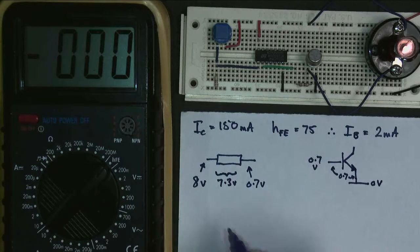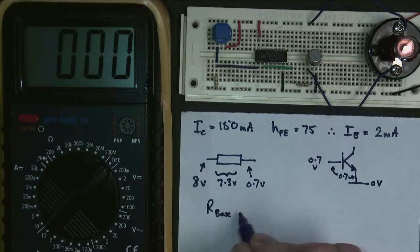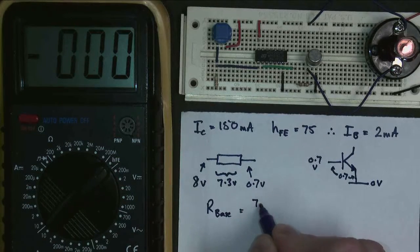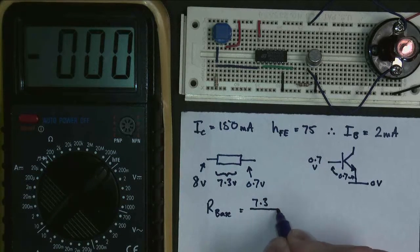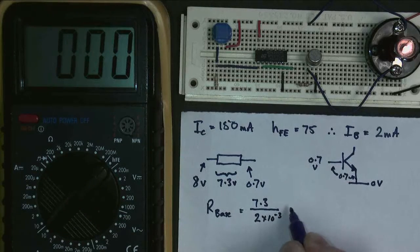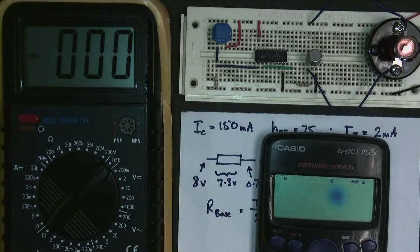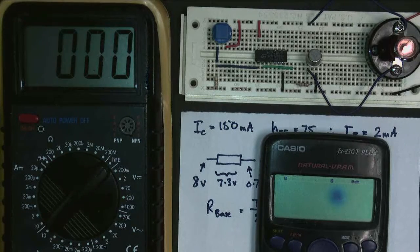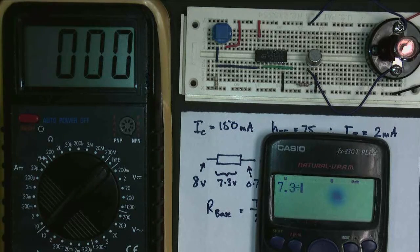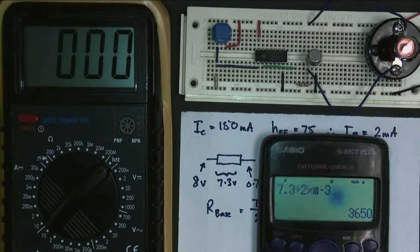If we now use our resistor equation, R_base equals 7.3 divided by 2 times 10 to the minus 3, equals 3,650 ohms.